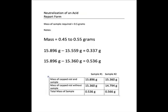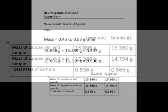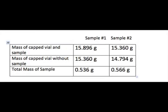To determine the mass of sample in the number two beaker, we subtract this amount from our previous mass. 15.360 minus 14.794 grams equals 0.566 grams, close enough to our needed sample size.